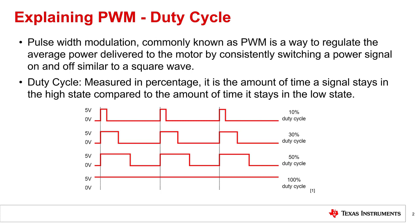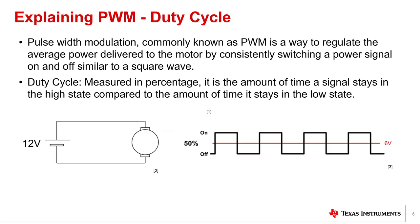Below we can see how different duty cycles look when plotted out. A 0% duty cycle would provide no signal to the motor. As we go down we can see how the duty cycle corresponds with the period of time spent on, up to a 100% duty cycle which would be a consistent signal. If we take a 12-volt power supply and continuously switch between a high and a low state such that it is on half the time and off the other half, the motor will experience an average of 6 volts as opposed to the 12 volts in the power supply.